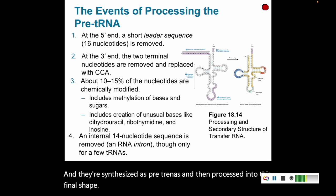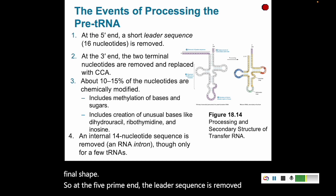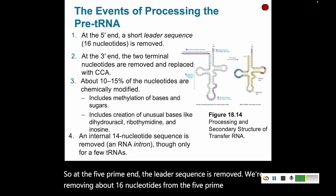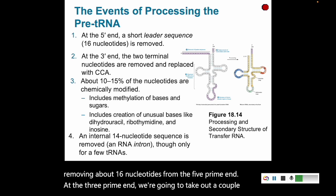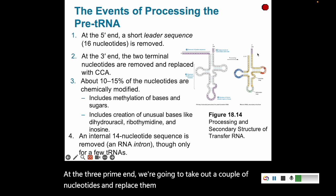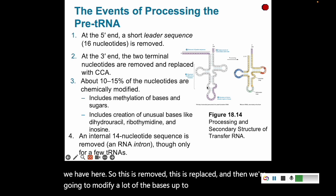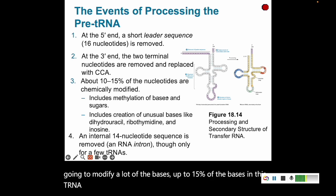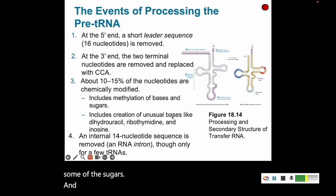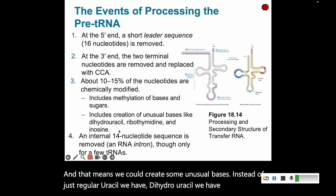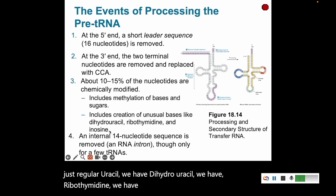At the five-prime end, the leader sequence is removed — about 16 nucleotides taken from the 5' end. At the three-prime end, a couple of nucleotides are removed and replaced with a CCA sequence. Then we modify a lot of the bases — up to 15% of the bases in the tRNA molecule. We can methylate some of the bases and some of the sugars, creating unusual bases: instead of regular uracil, we get dihydrouracil, ribothymidine, and inosine. So we are chemically modifying some of those structures.